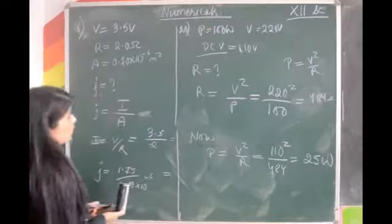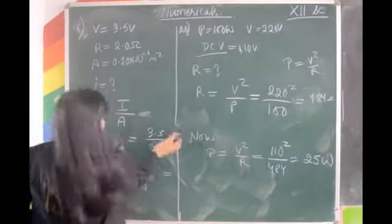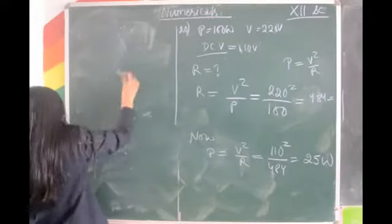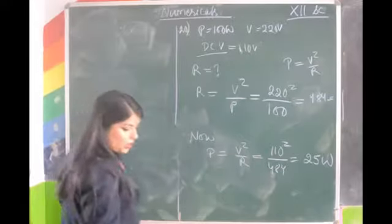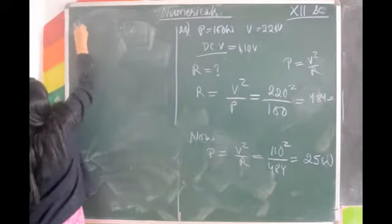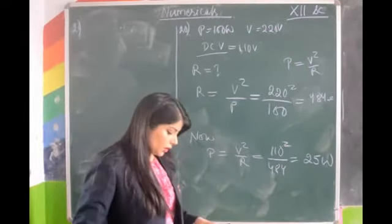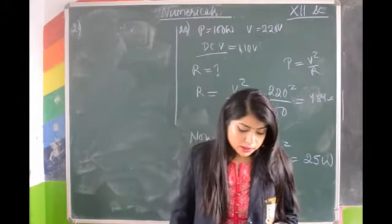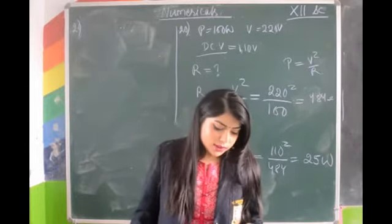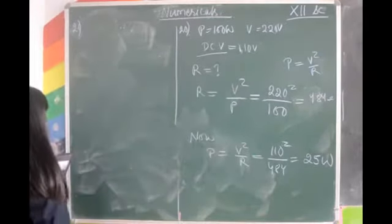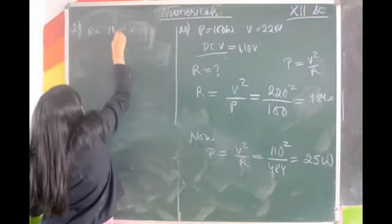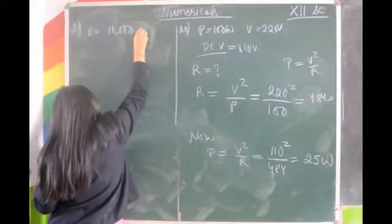Next question is question number 21: the maximum power dissipated in a 10,000 ohm resistor is 1 watt — what is the maximum current? The values given are: resistance = 10,000 ohm and power = 1 watt. This is the maximum power dissipated in this resistor and we have to find the current.